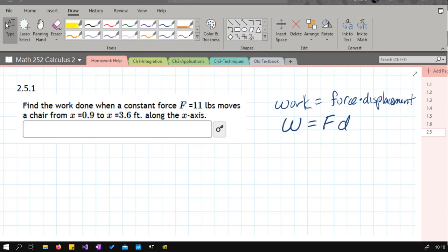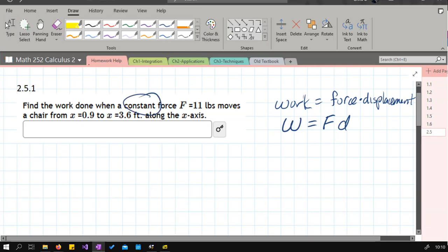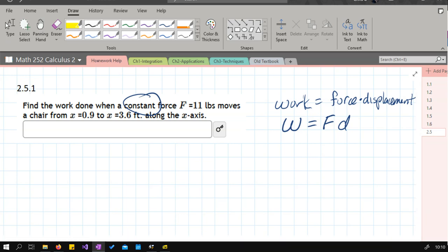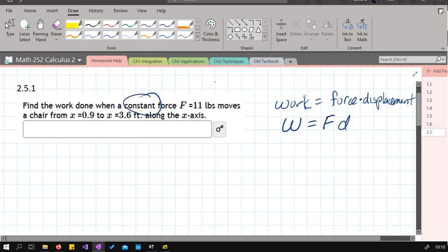The first physics problem we're going to look at is a constant force problem. You don't even actually need calculus for this. So let's talk about work. Work is force applied across a distance, so work equals force times distance. W equals FD.